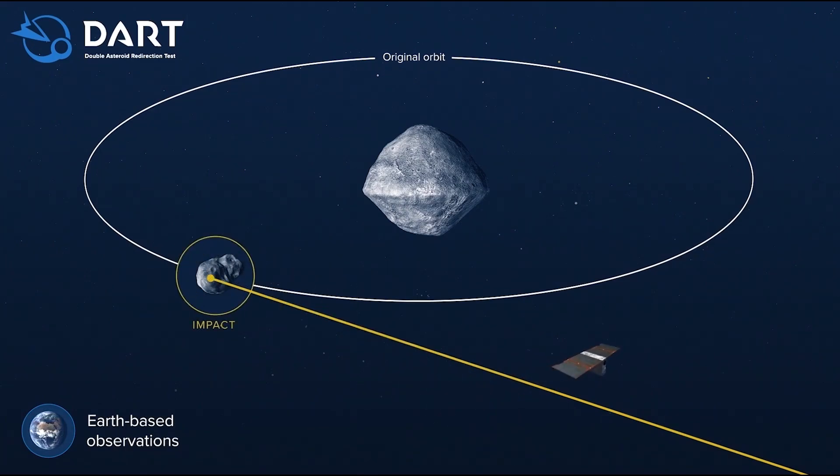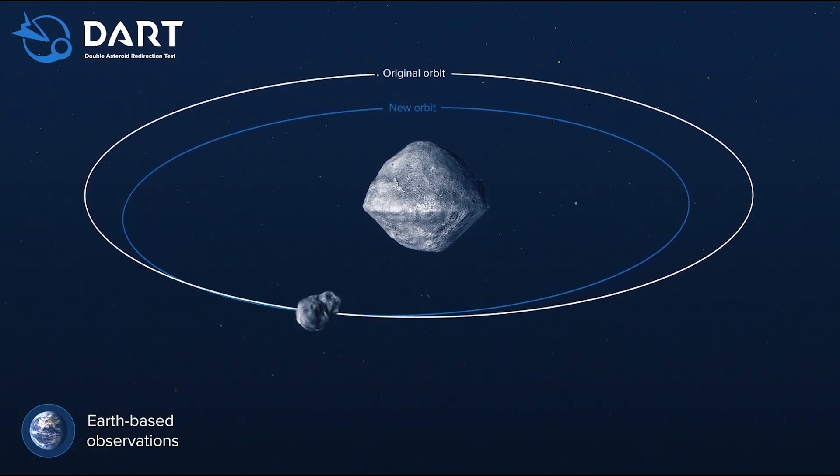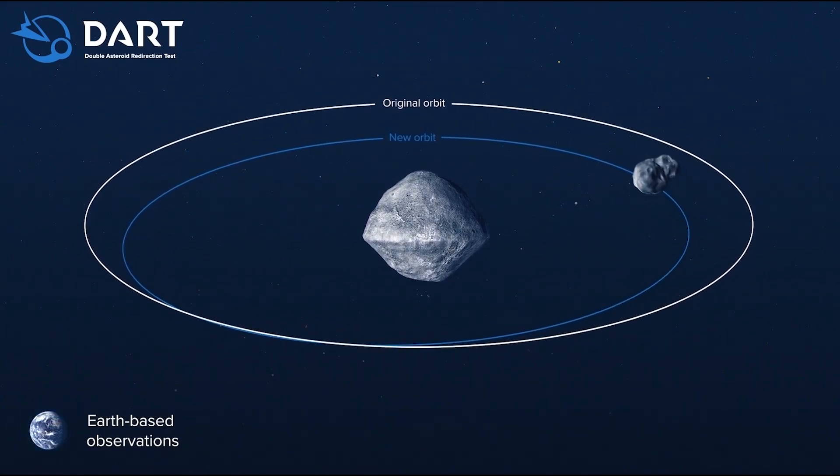So the person who came up with this just really amazingly innovative. And so we can measure using the orbit changes any deflections that actually really matter in real life. And we call this a planetary defense mission. Can you explain a little bit more about what that means and why it's important?